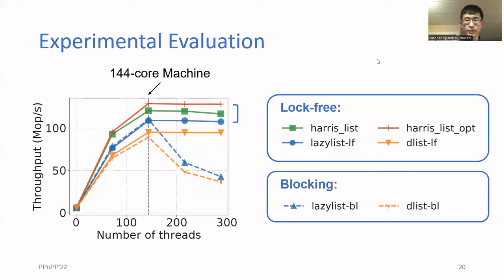If we compare lazy list using lock-free locks with Harris's list, we see that there's a gap of about 16%. This is because Harris's linked list uses a more efficient method of helping that's specifically designed for a linked list.